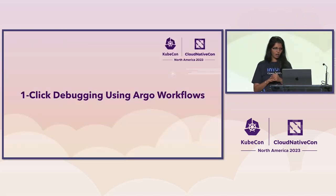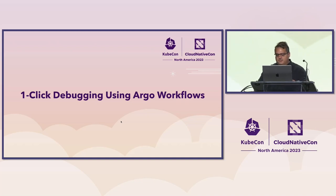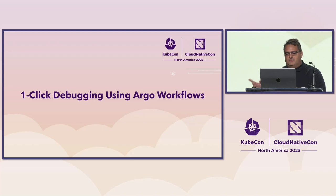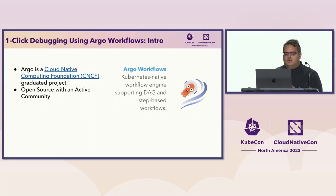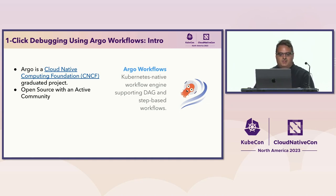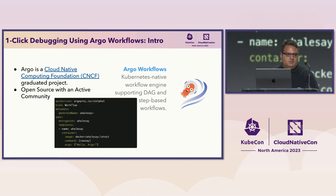I'd like to hand it over to Kevin to talk about Argo workflows. What you just saw was a power user flow. But what if we know exactly what we want to do and want to give the most simplified usage for our developers? Argo is a CNCF graduated, open source project with a very active community. It's a Kubernetes-native workflow engine with DAG support, a bunch of UI, and tooling. If you want to learn more about workflows, stop by our booth in the showcase — we have a lot of demos there.